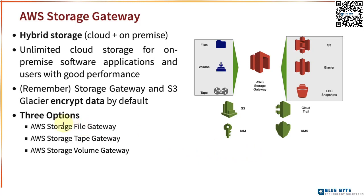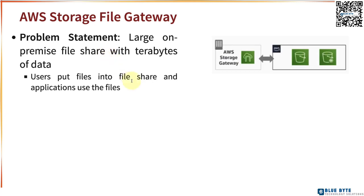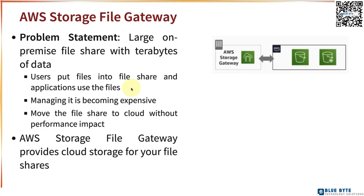AWS Storage Gateway provides three different options: file gateway, tape gateway, and volume gateway. For file gateway, let's say you have a large on-premise file share with terabytes of data — users put files into this file share and applications use those files, but managing it is becoming really expensive. You want to move the file share to the cloud without any performance impact. That's where AWS Storage File Gateway comes in — it provides cloud storage for your file shares, with files ultimately stored in Amazon S3 and Glacier.